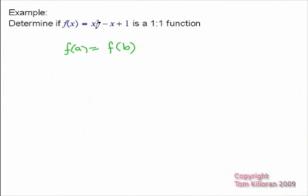So basically just plug in a and then plug in b, and our goal is if it's going to be one-to-one, then a must equal b.